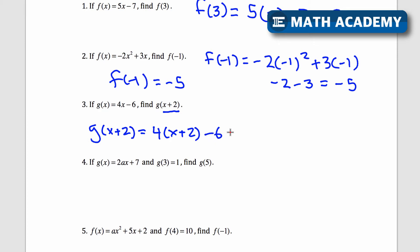And I'll do minus 6. So let's distribute 4. This is going to be 4x plus 8. 4 times 2 is 8 minus 6. And that would simplify to 4x plus 2. So g of x plus 2 is equal to 4x plus 2 in its simplified form.